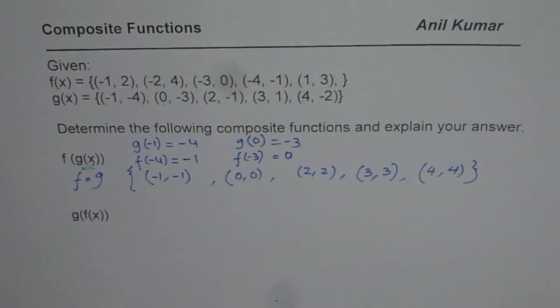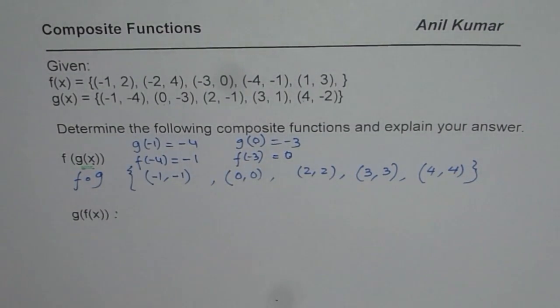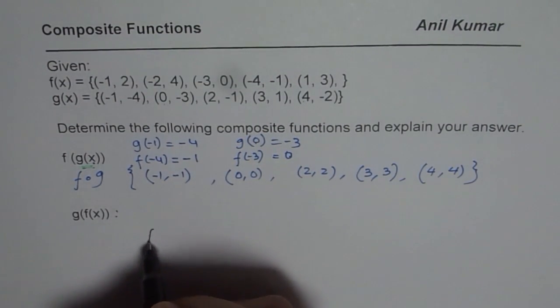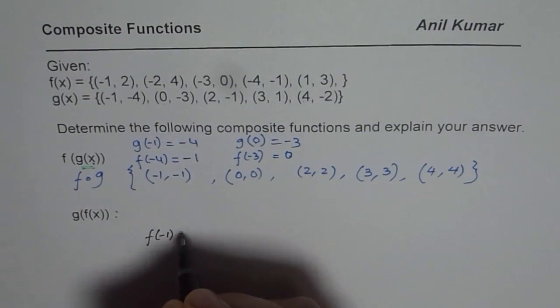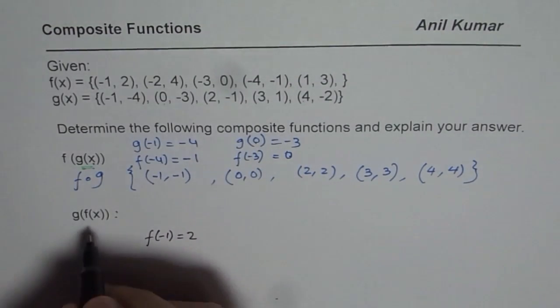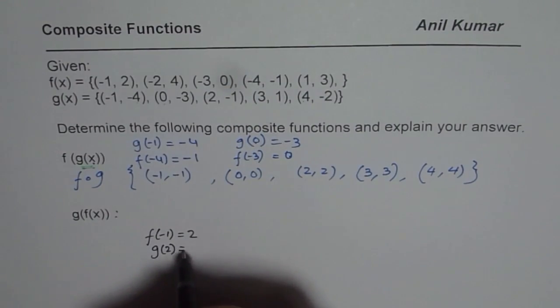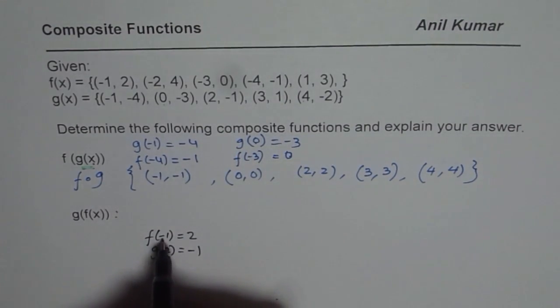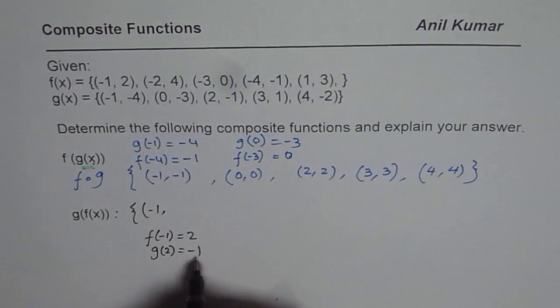Now let us calculate g(f(x)). g(f(x)) will follow exactly the same process. First step will be finding f of the first number, minus 1 in this case. So we will say f of minus 1 is 2. Then what is g of 2? g of 2 will be minus 1. So for the input of minus 1, output is minus 1.